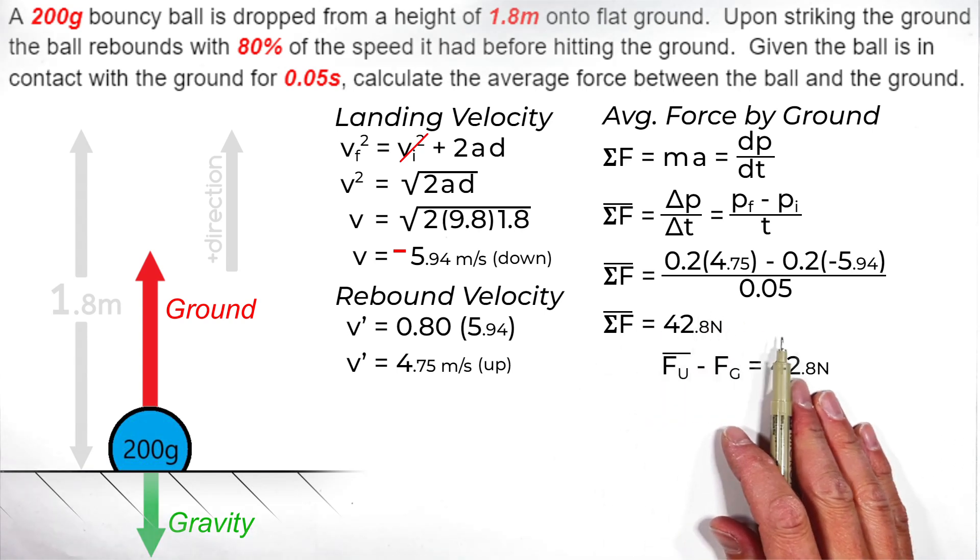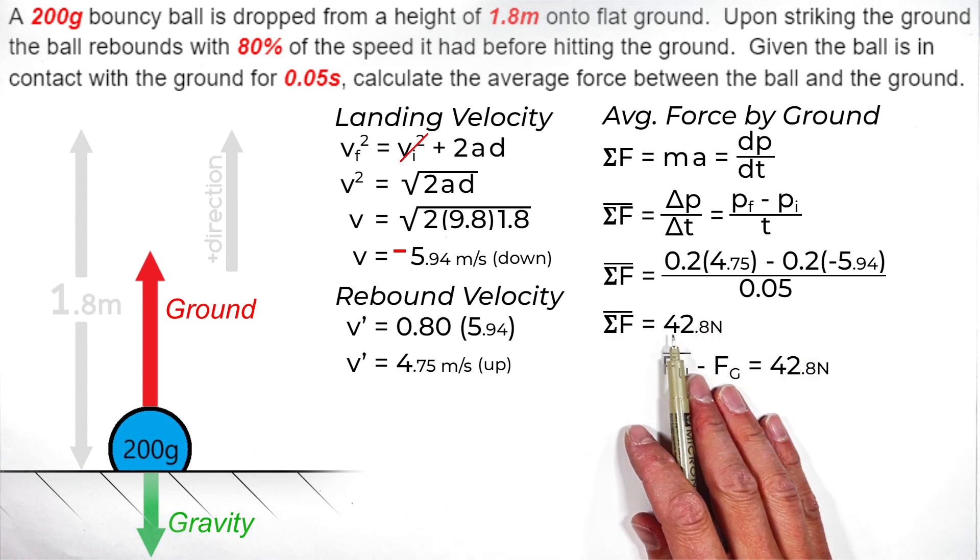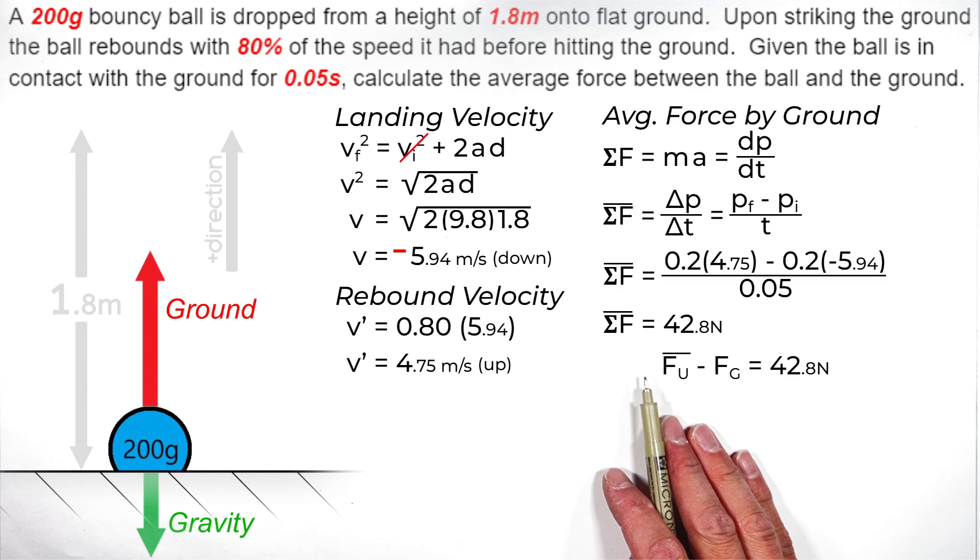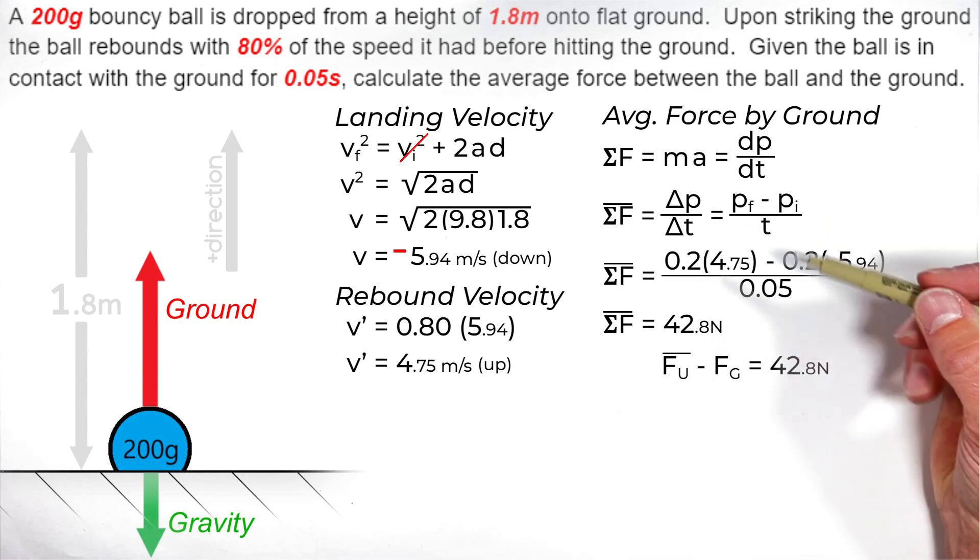So truly this 42.8 newtons, or the net force on the ball, is the result of the upward force by the ground minus the force by gravity.